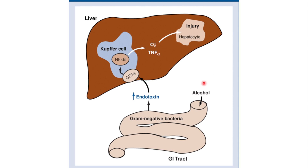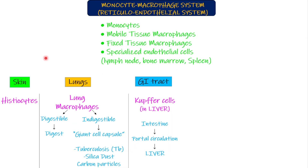If we eat something that has bacteria in it, the bacteria will move through the portal circulation into the liver, and there the Kupffer cells will break down and kill that foreign body. So these are the three entry points from where a foreign body can enter the human body, and at all these points there are macrophages acting as an army — histiocytes in the skin, lung macrophages in the lungs, and Kupffer cells in the liver.